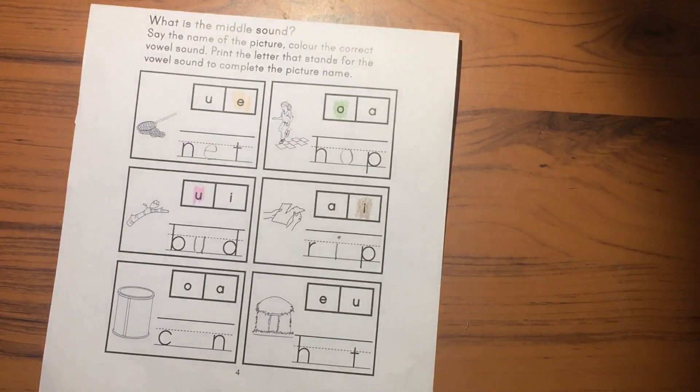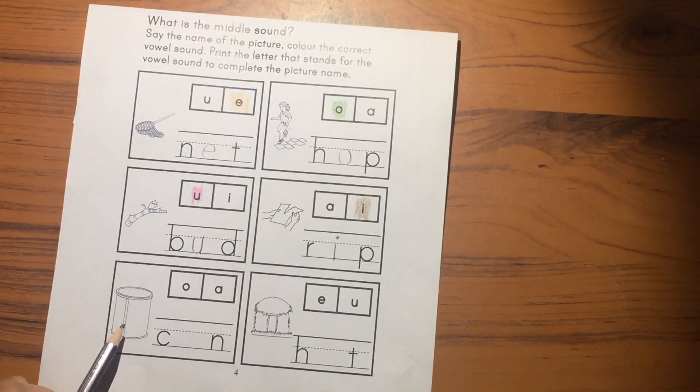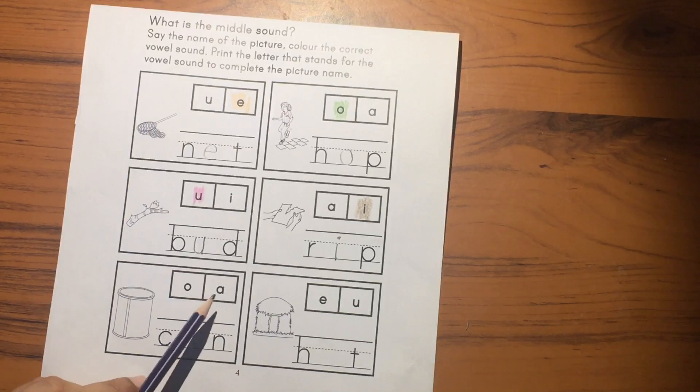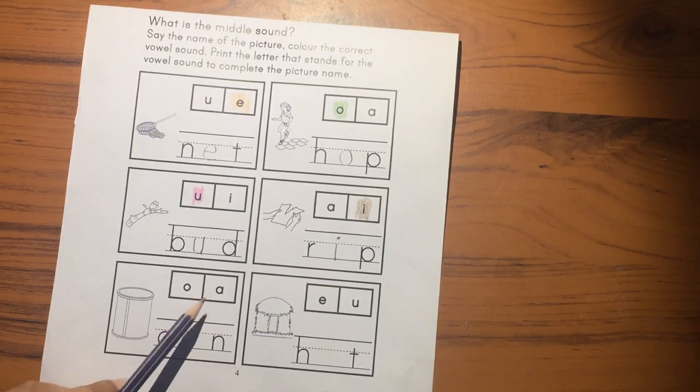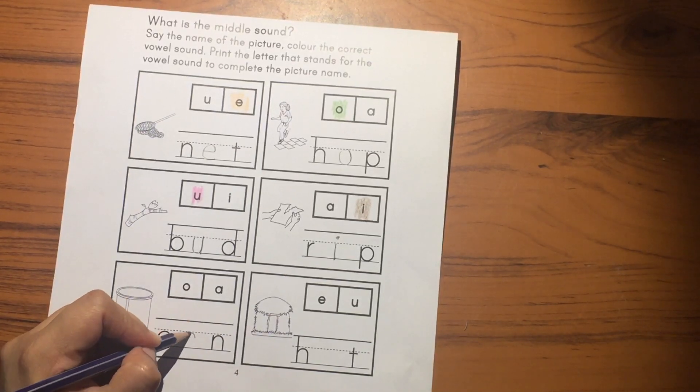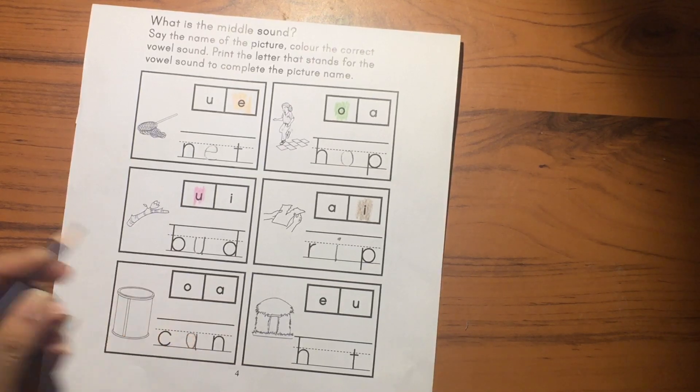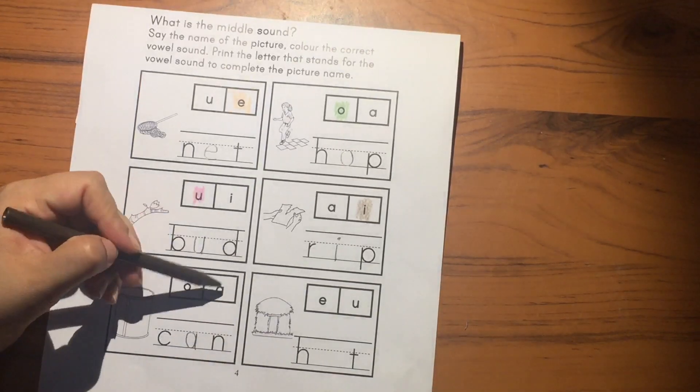The next picture is can. What is the middle sound for can? C-A-N. Can. So you will write A here. And you will color the A vowel.